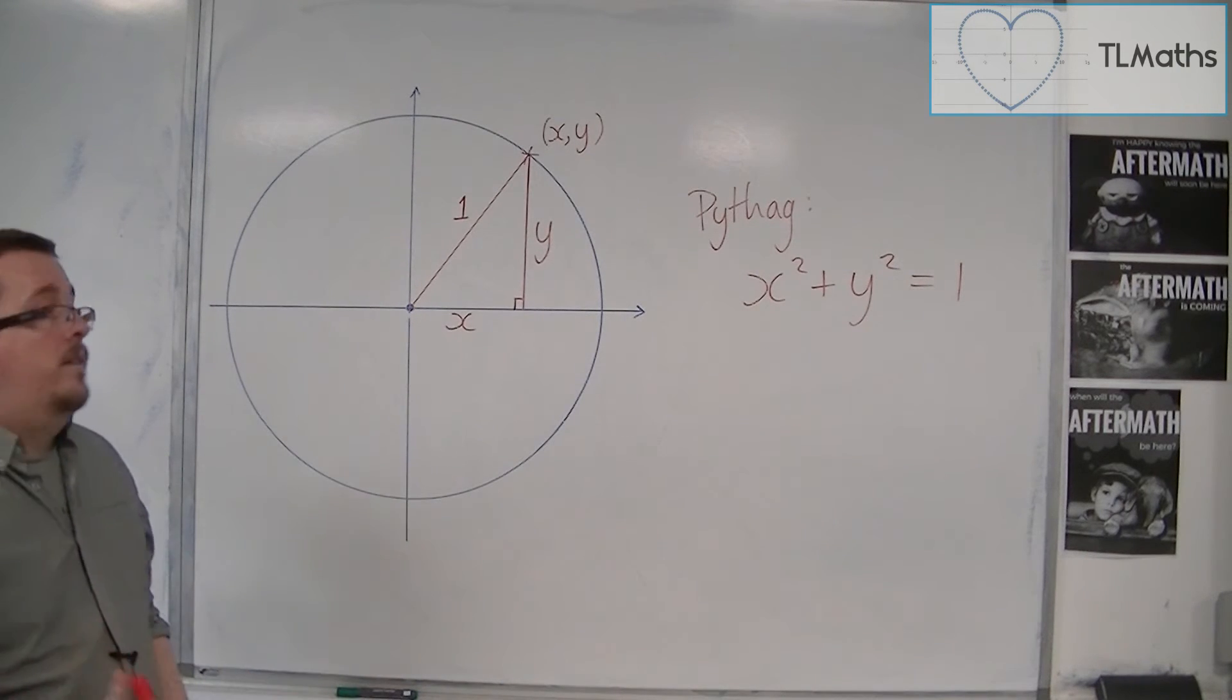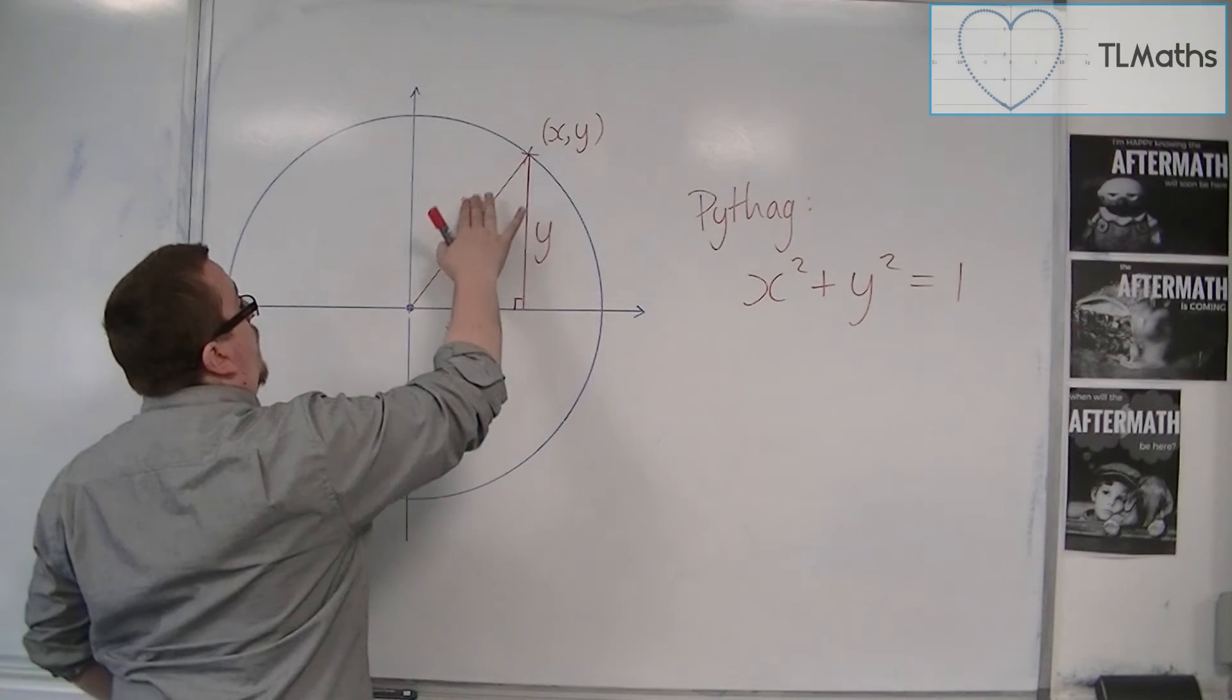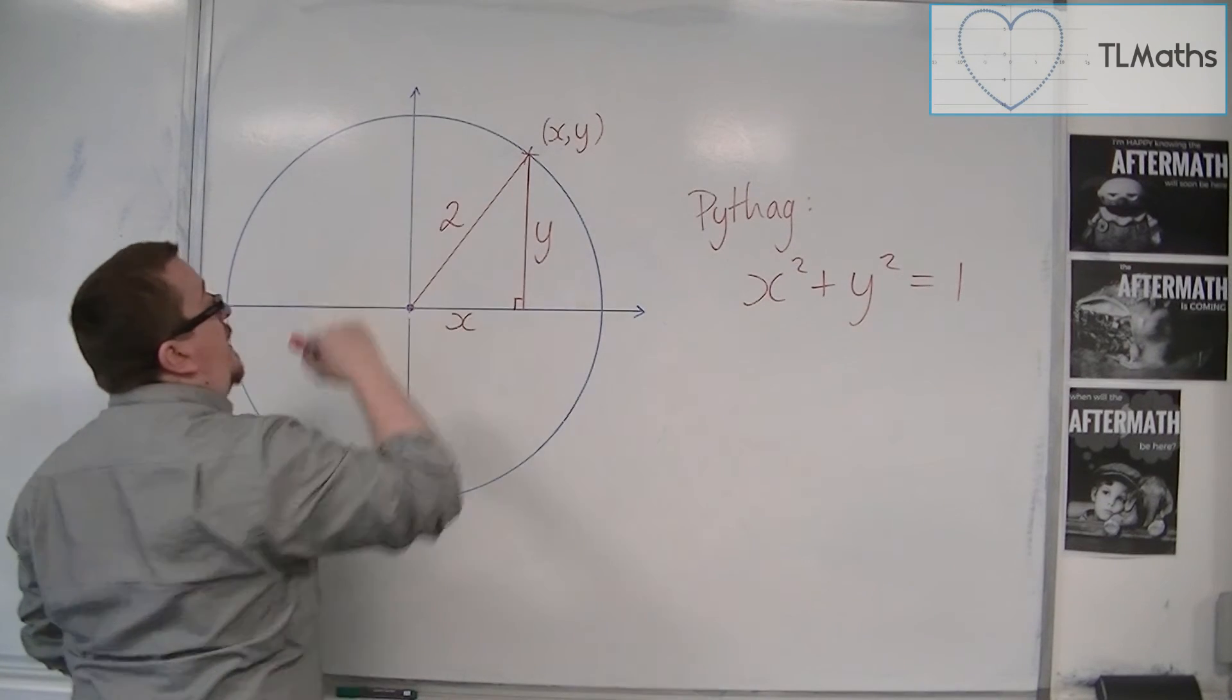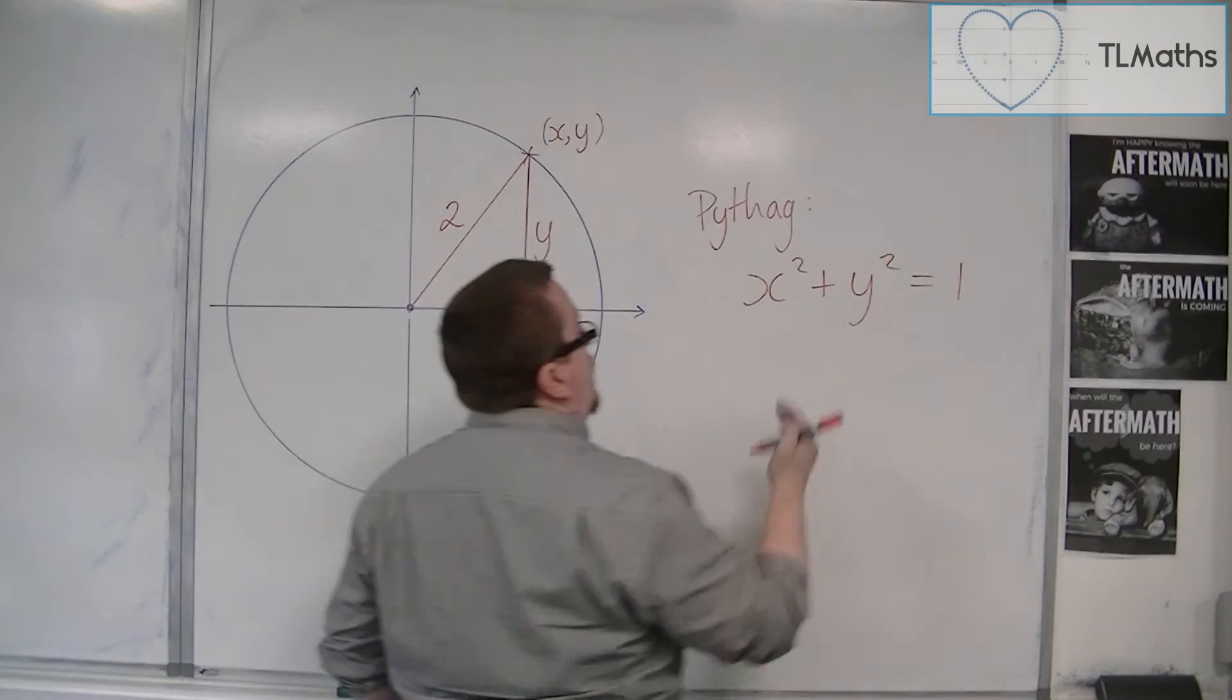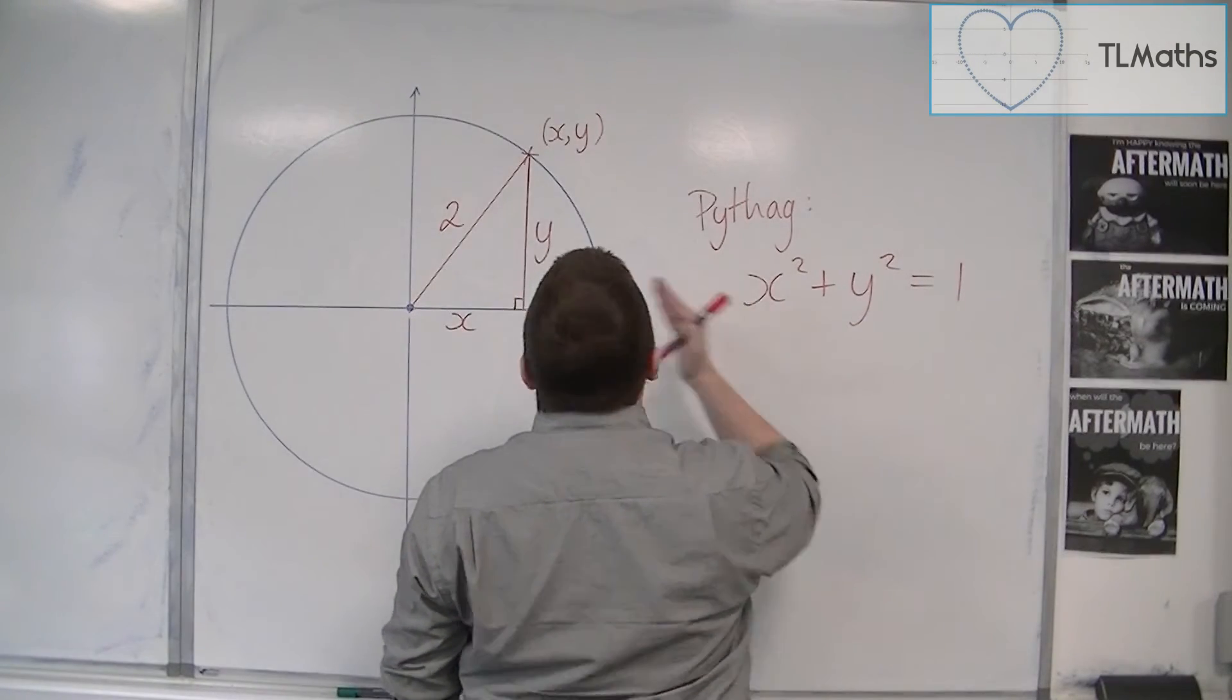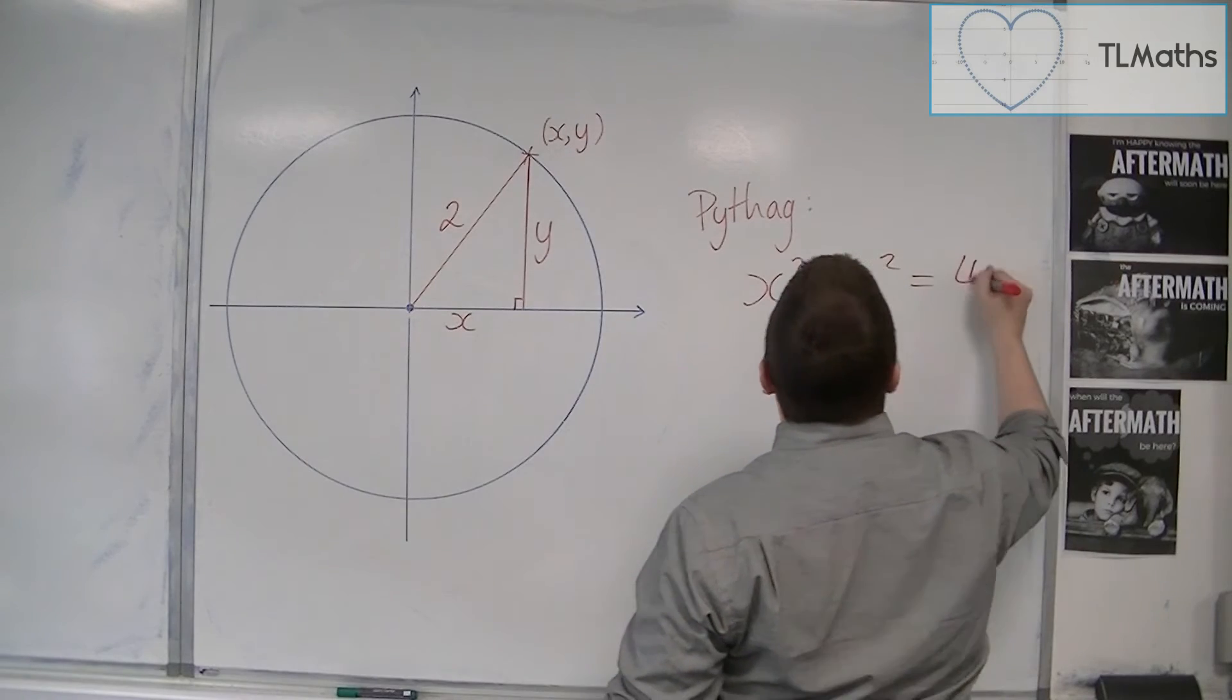So if I then extend this, let's say I now look at a circle with radius 2, then the equation would be x squared plus y squared equals 2 squared, or 4.